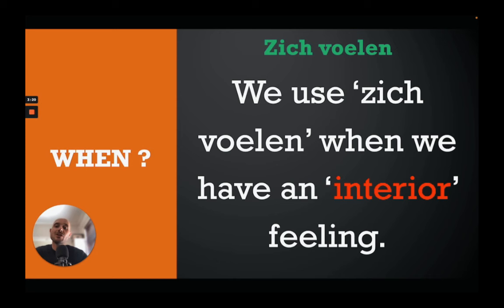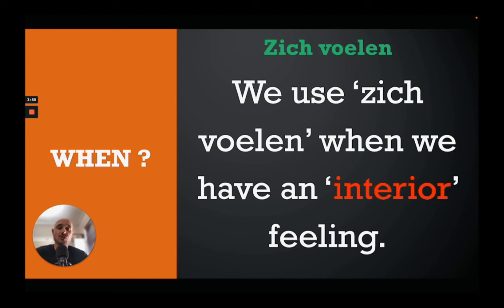When do we use 'zich voelen' as a translation for 'to feel'? It's basically when we have an interior feeling. For example: 'ik voel me goed' — that good feeling you feel inside; 'ik voel me blij' — I feel happy, that happy feeling on the inside; 'ik voel me trots' — I feel proud inside. So if it's about an interior feeling — something you feel on the inside — you use 'zich voelen,' the reflexive verb.